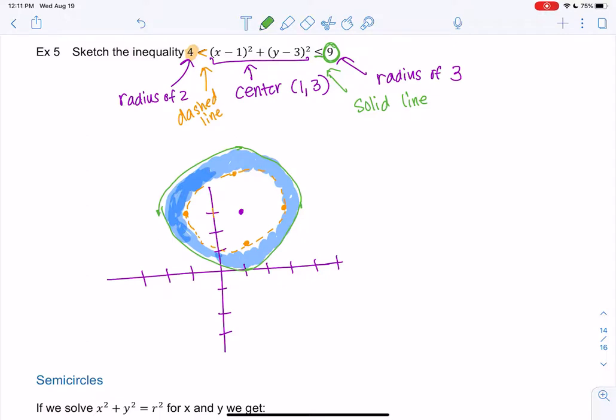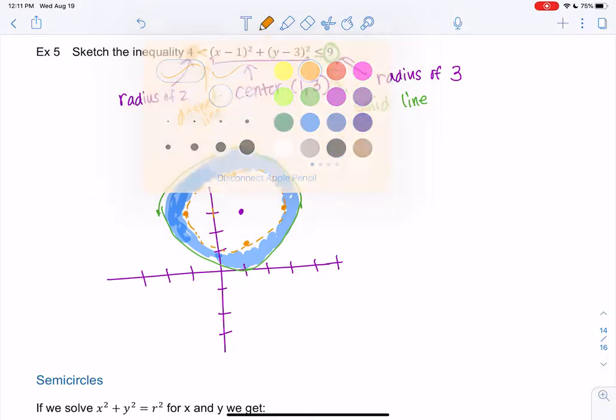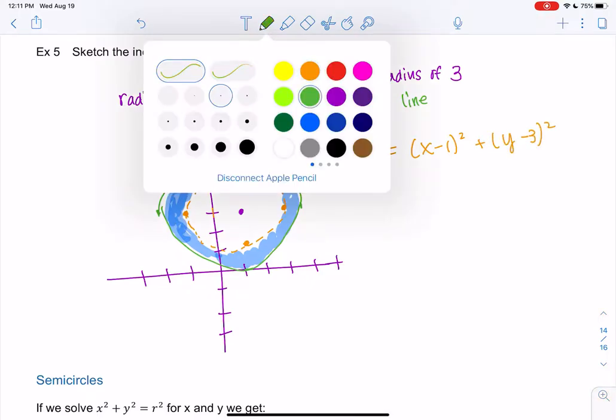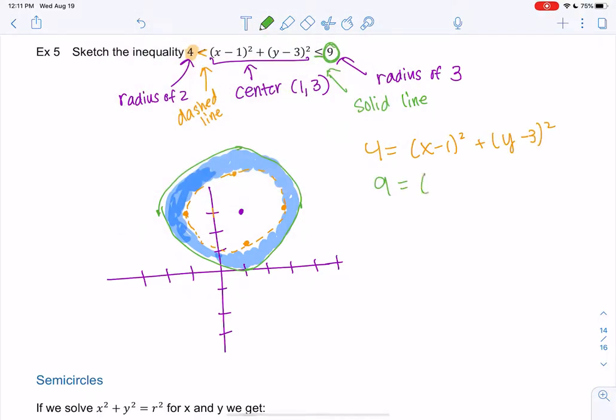If you're not really sure what I was graphing, right, the orange one, just a refresher, was 4 equals this, right? That's a circle. And then the green one was this circle, right? And we're just saying it's the area in between.